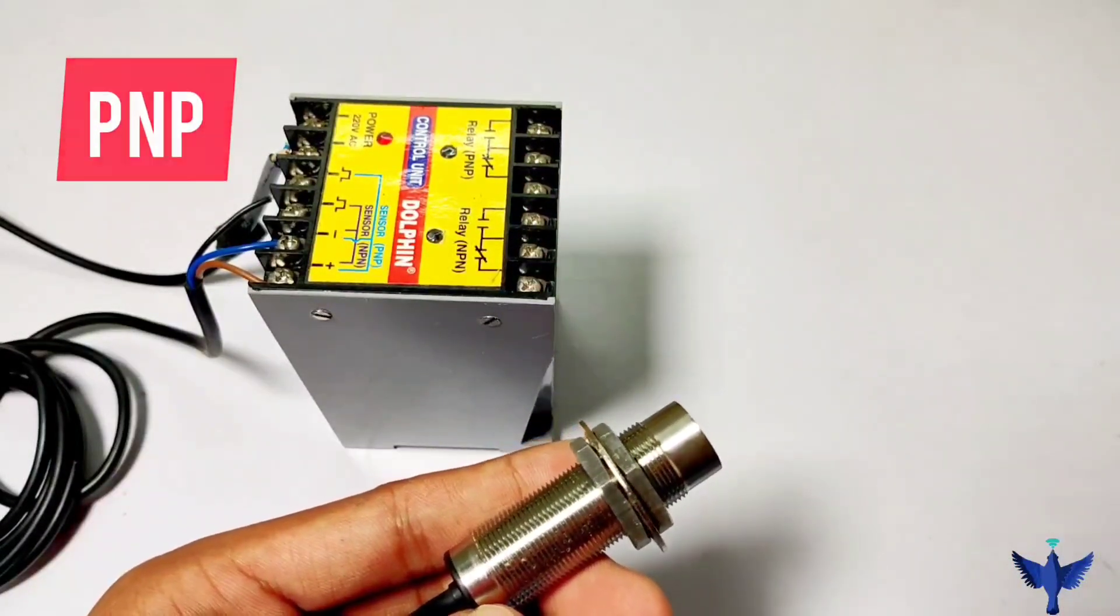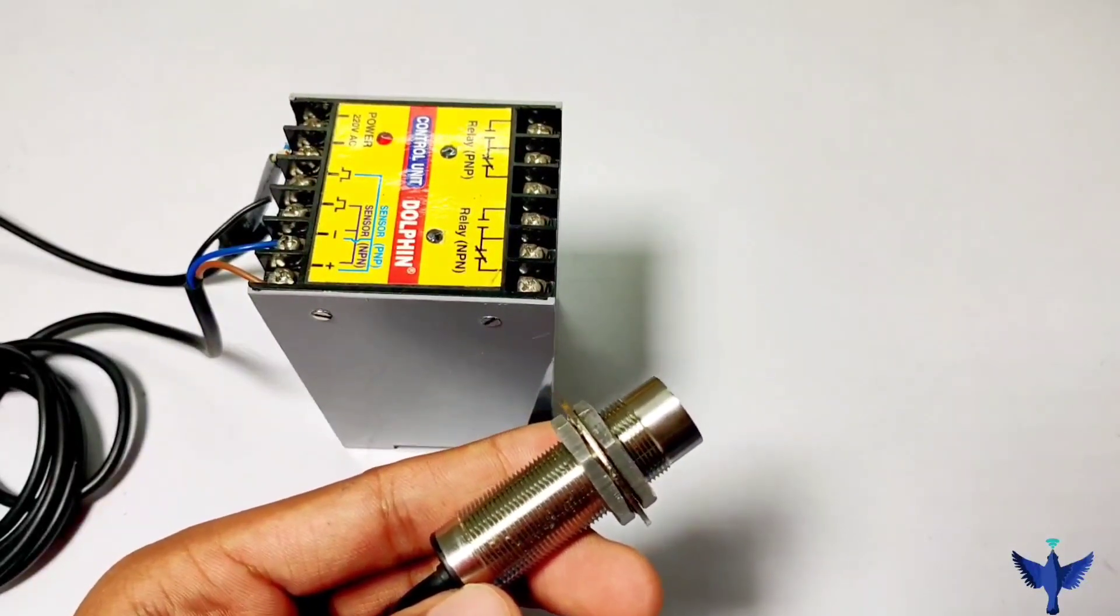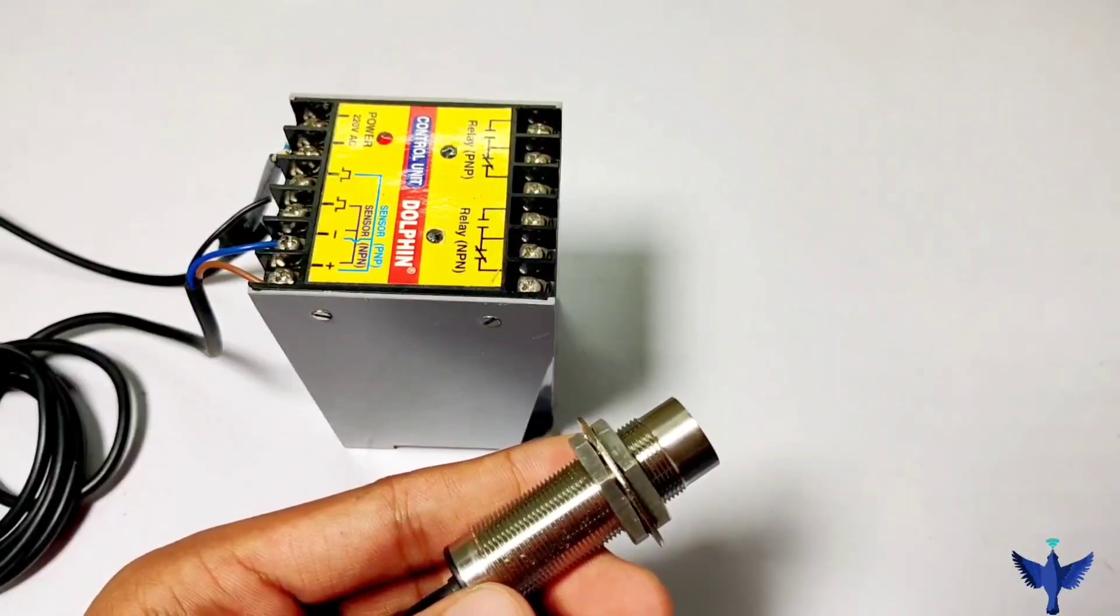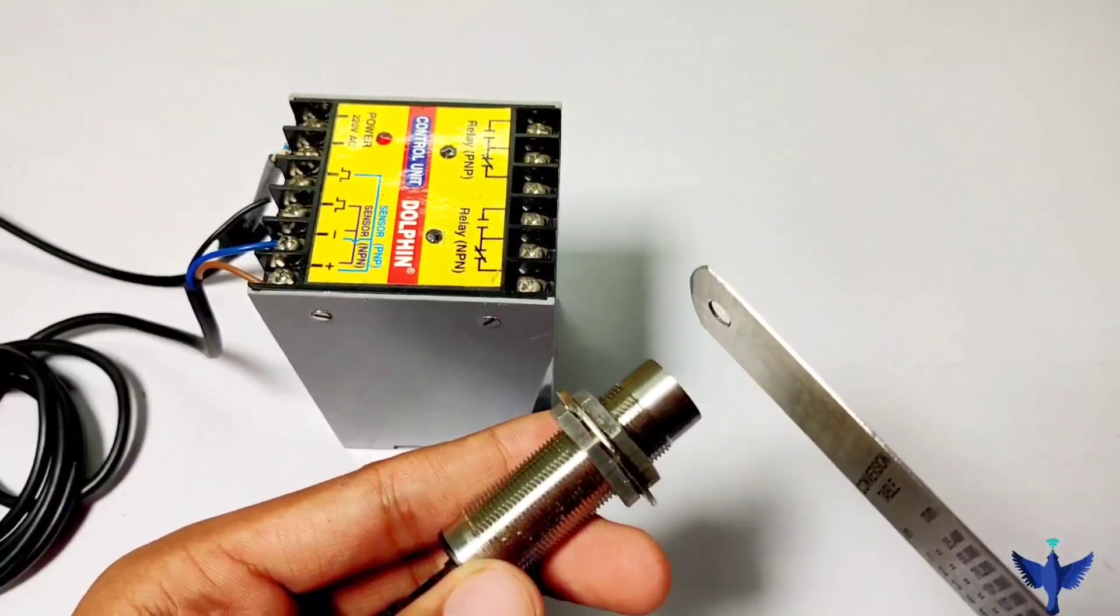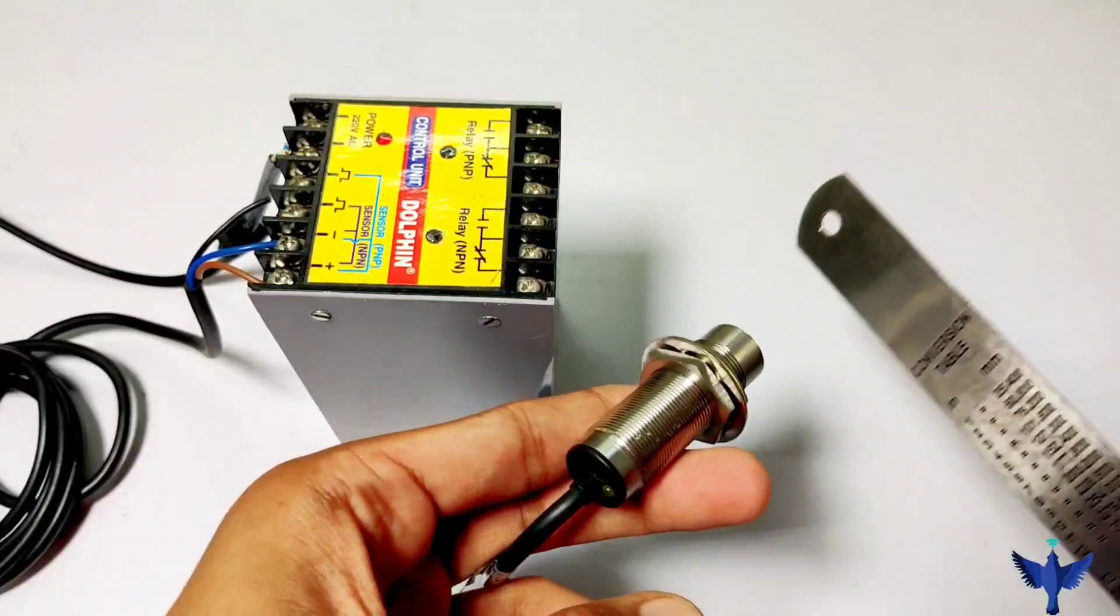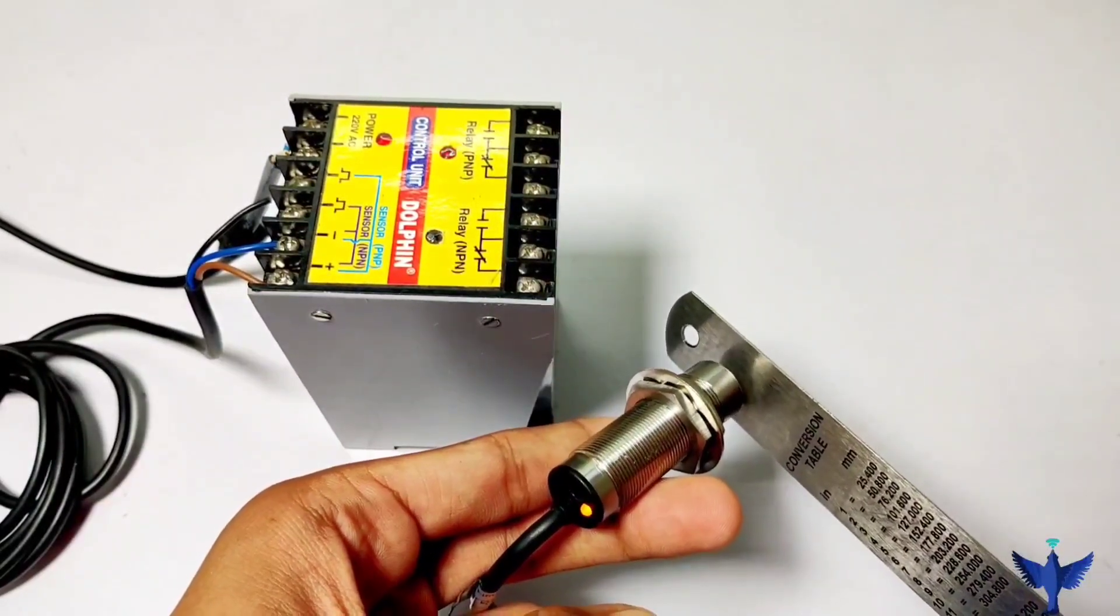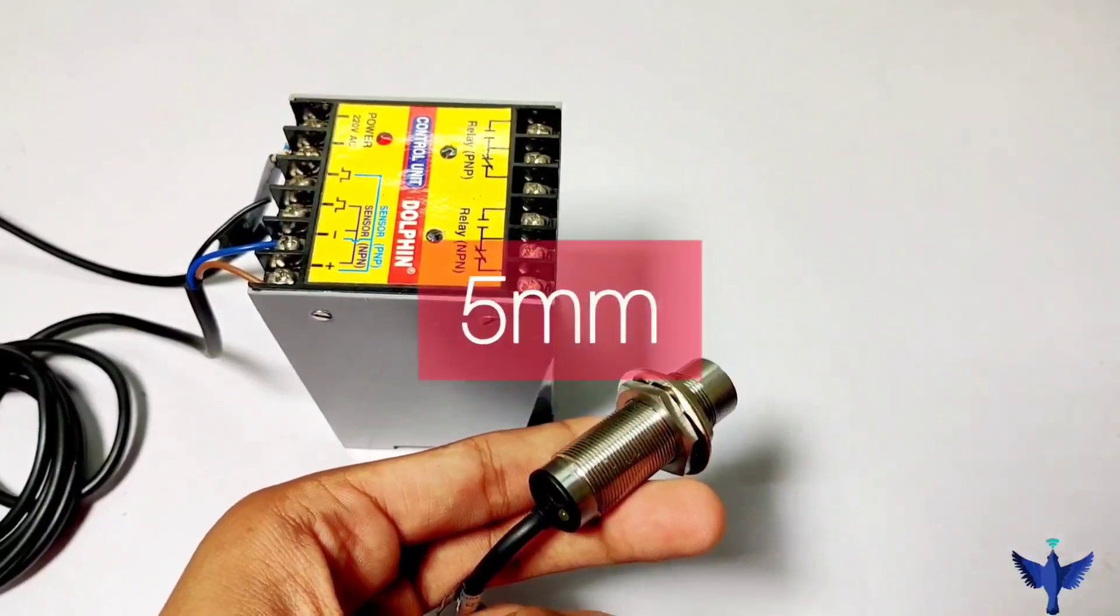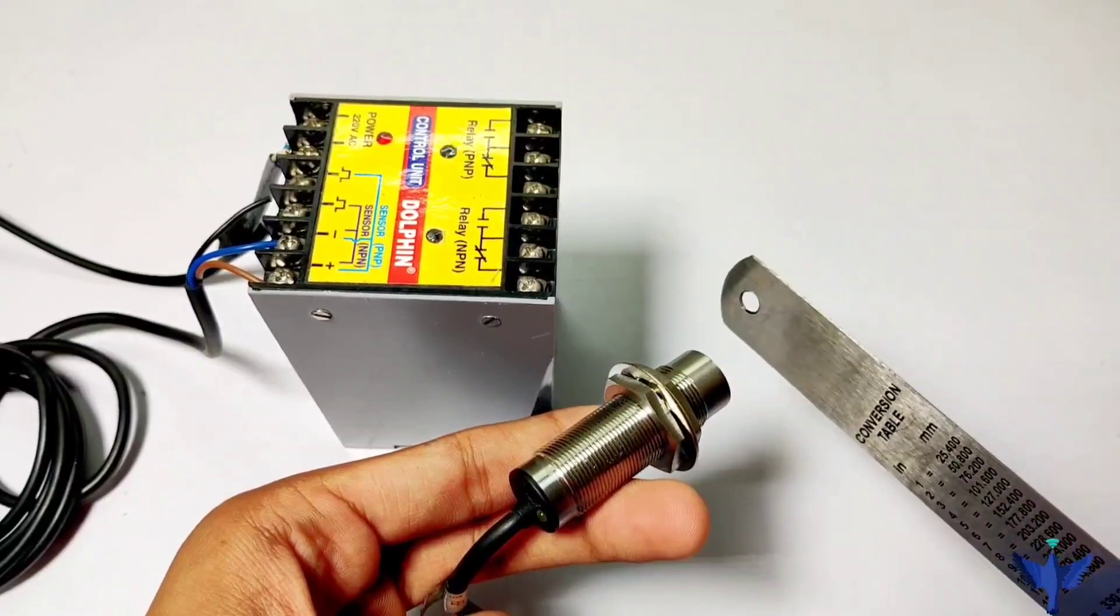Now let's see the working of this sensor. This is a metallic sensor, which means it will sense metallic targets. If I bring a metal target in front of this, it gives an output. We can see the LED indication. The sensing range I get is about 5mm, and the range will vary depending upon the ferrous material in the target.